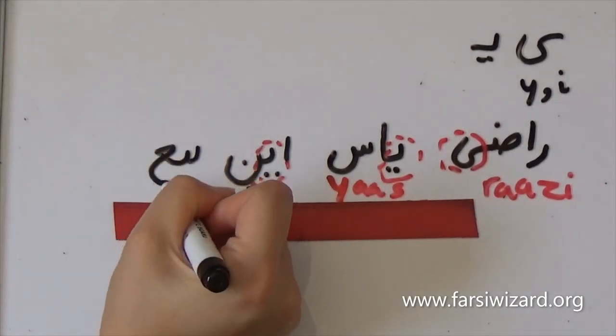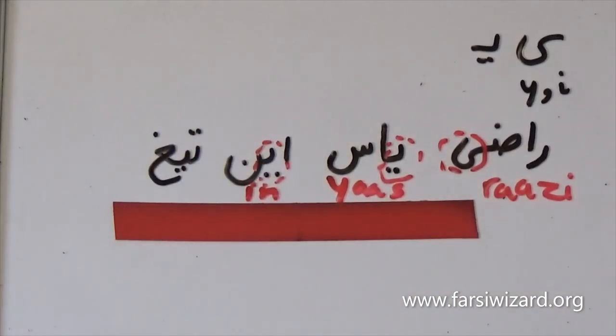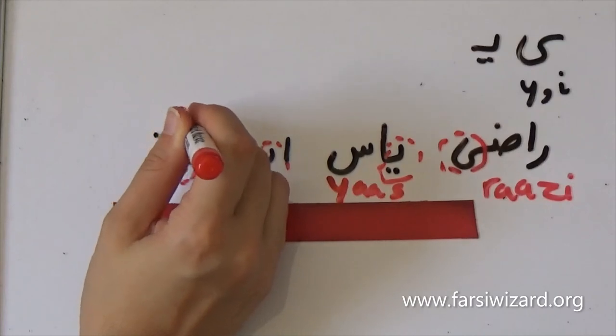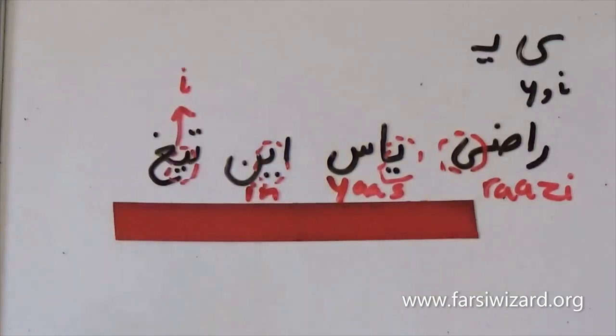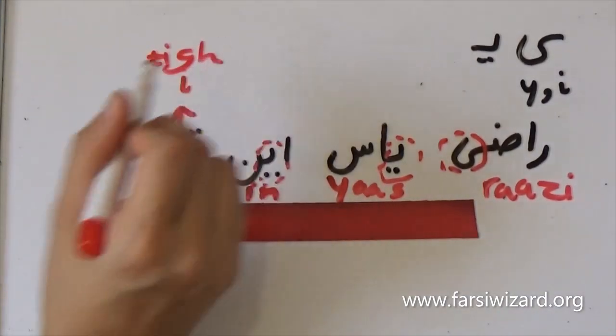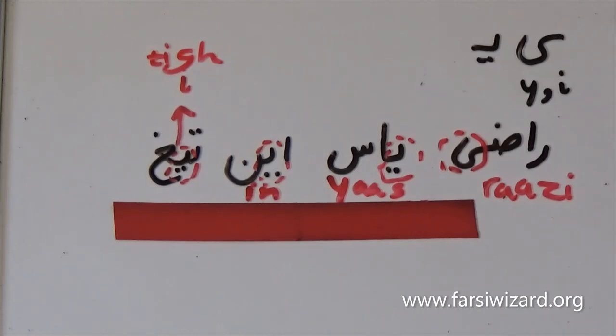So tiq means thorn or razor, and as you can see, it's the version of ye which has two dots under.